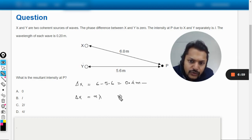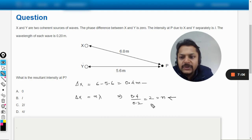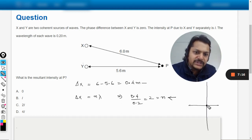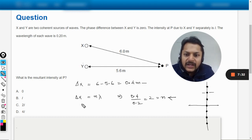Delta X is coming out to be 6 minus 5.6, which comes out to be 0.4 meters. Clearly it is an integral multiple of λ because λ is 0.2. So when you divide 0.4 by 0.2 you get 2. So n equals 2. It means we are indeed talking about the second bright spot in the pattern. There is the central maxima, then the first maxima, then the second maxima, then the third. We are talking about the second maxima here because n equals 2.